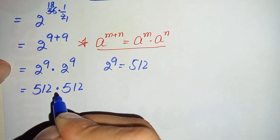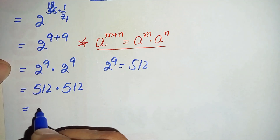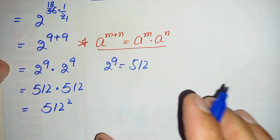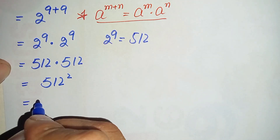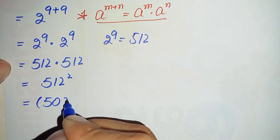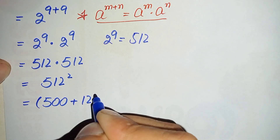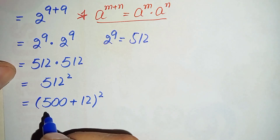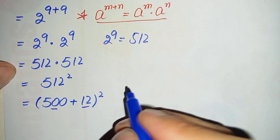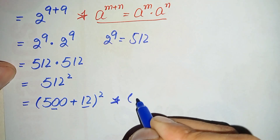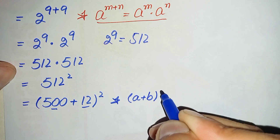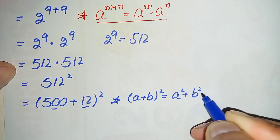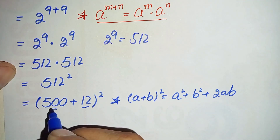Since the same number 512 is multiplied two times, we can write this as 512 squared. We can write 512 as 500 plus 12, so this becomes (500 plus 12) whole squared. Now we will use the famous algebraic identity: (a plus b) whole squared.